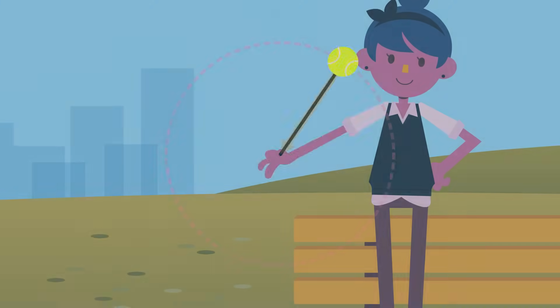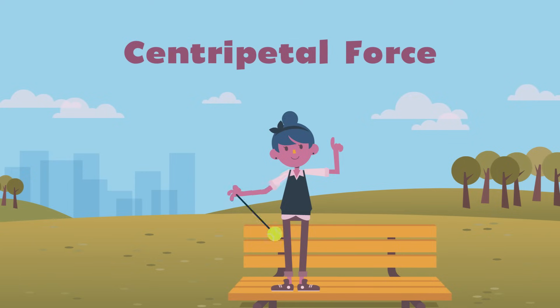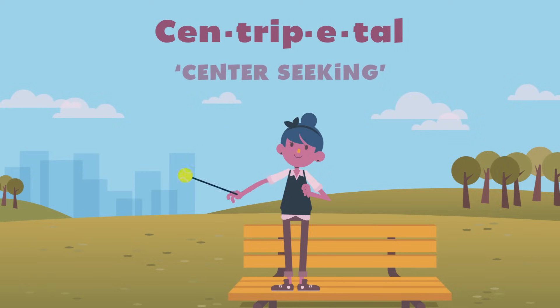Now back to our spinning ball. For objects undergoing circular motion, the net force on the object is called the centripetal force. It's a weird-sounding word, but it's Latin for the phrase center-seeking.